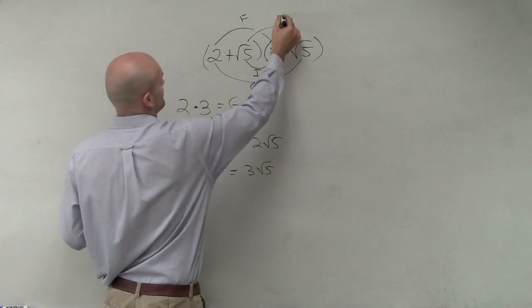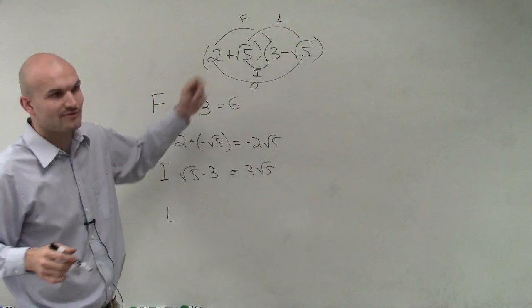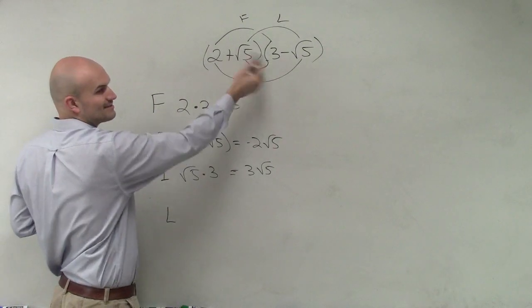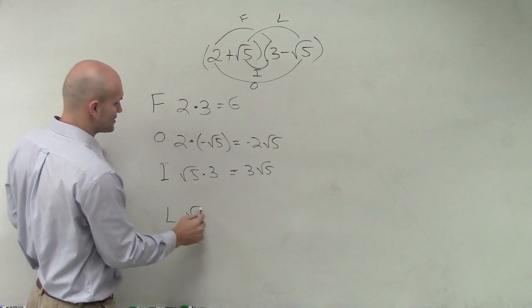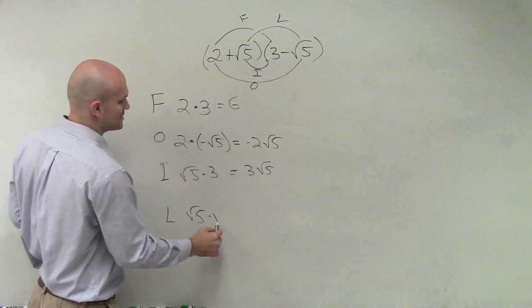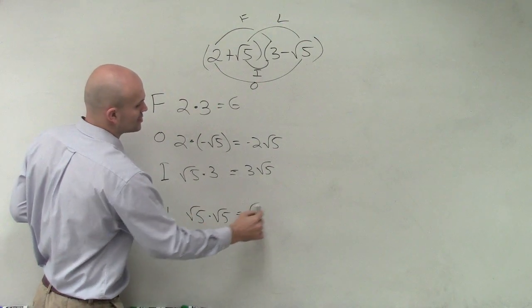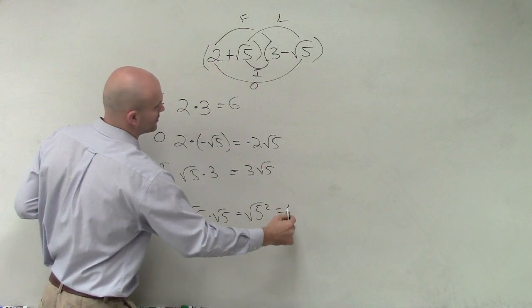And then we do the last. And you can just see I kind of create a nice little FOIL face. So the last is going to be the square root of 5 times the square root of 5, which equals the square root of 5 squared, which equals 5.